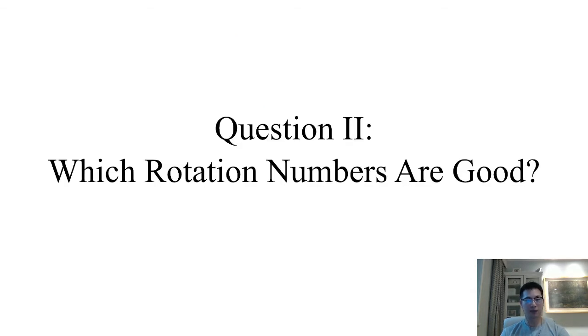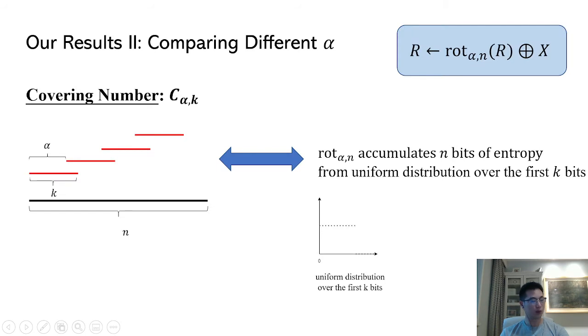The first result justifies the use of rotation, but only if we are willing to wait n steps. It fails to distinguish between different rotation numbers alpha. When rotation number alpha is 1, even if the input already has very high entropy, we do need roughly n steps in order to accumulate nearly n bits of entropy. So if we wish to do better, we must somehow distinguish between different rotation numbers.